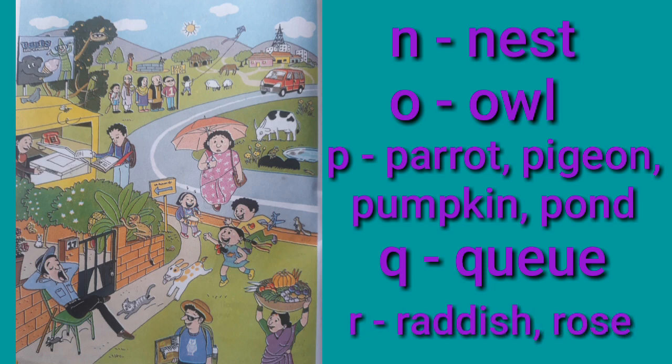From P: Parrot, Pigeon, Pumpkin, Pond. From Q: Queen. From R: Radish and Roads.